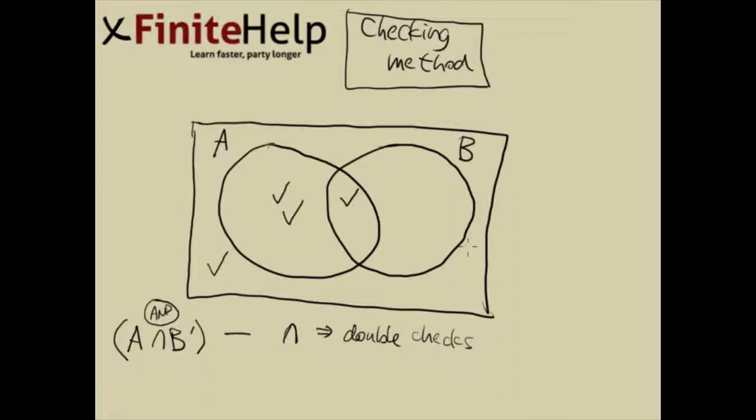So double checks or more. And the area that's double checked or more is going to be in this area. So this is exactly A intersect B prime.